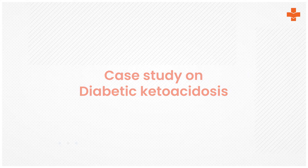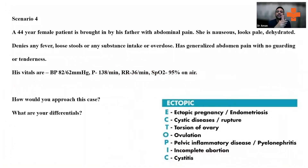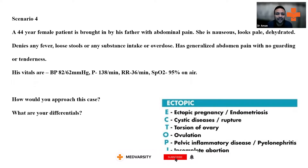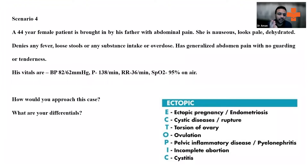Let's talk about the next scenario. You've got a 44-year-old female brought in by her husband with abdominal pain. She's nauseous, looks pale and dehydrated, denies any fever, loose stools, substance intake, or overdose. She has generalized abdominal pain with no guarding. Her vital signs are a little unstable — blood pressure is 82/62, pulse rate is high, respiratory rate is high.